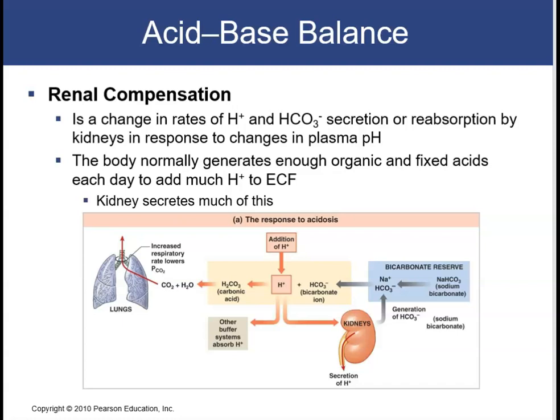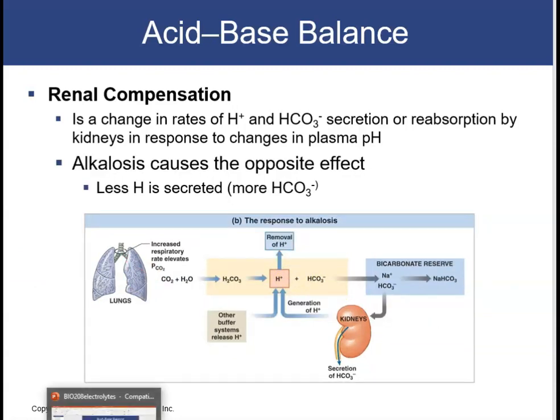How do the kidneys help compensate? There will be a change in the rate of hydrogen ion and bicarb secretion or reabsorption by the kidneys in response to changes in plasma pH. The body normally generates enough organic and fixed acids to add many hydrogen ions to the ECF, so the kidneys help by secreting many of these. In response to acidosis, the kidneys dump hydrogen ions into the urine and generate bicarb to buffer excess hydrogen ions. In a state of alkalosis, the kidneys secrete excess bicarb and help generate hydrogen ions to put back into the plasma.